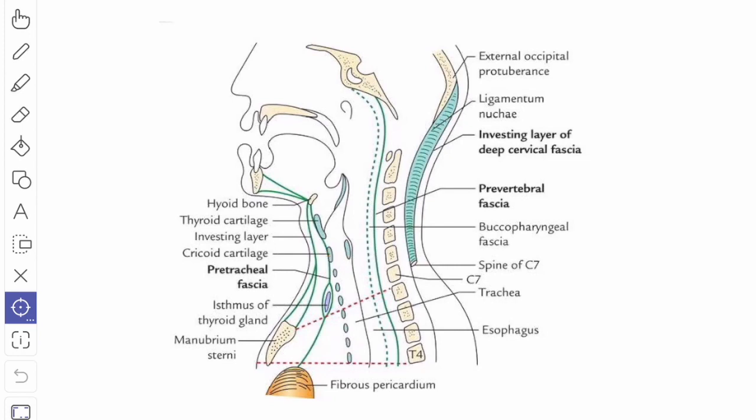The attachment of the pretracheal fascia to the hyoid bone, thyroid cartilage, and the cricoid cartilage allows the thyroid gland to move up and down with deglutition.